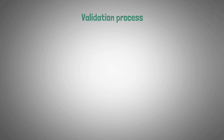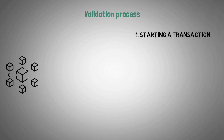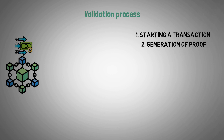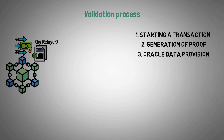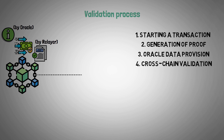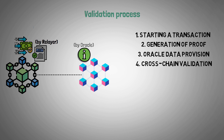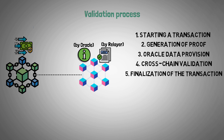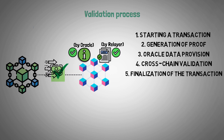Here is how the validation process works. First, on the source blockchain, a user starts a transaction. Next, a transaction proof is produced by the relayer. The oracle then supplies the information required to verify the transaction. In the cross-chain validation step, the target blockchain receives both the data from the oracle and the proof provided by the relayer. Finally, if the data and the proof match, the target blockchain verifies the transaction and completes the cross-chain transfer.